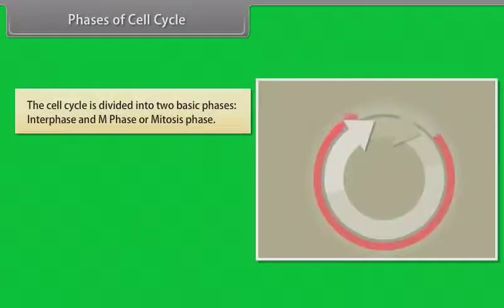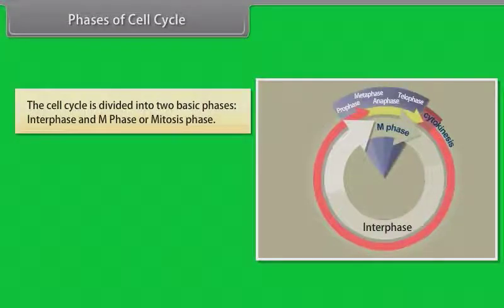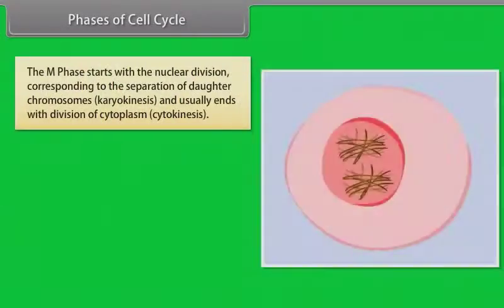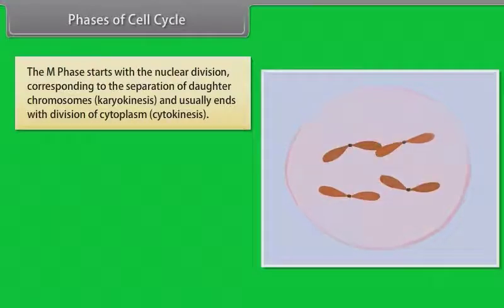The cell cycle is divided into two basic phases: interphase and M phase or mitosis phase. The M phase represents the phase when the actual cell division or mitosis occurs, and the interphase represents the phase between two successive M phases. The M phase starts with nuclear division corresponding to the separation of daughter chromosomes, karyokinesis, and usually ends with division of cytoplasm, cytokinesis.